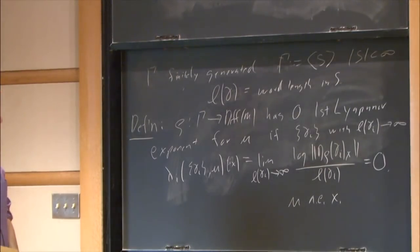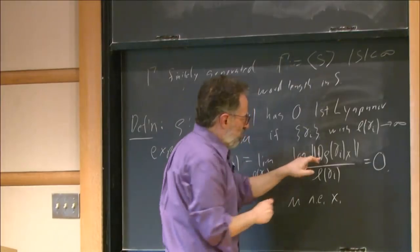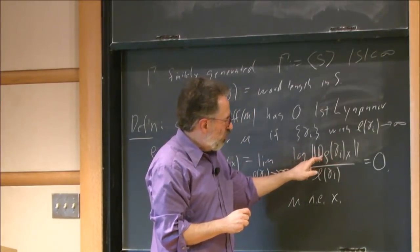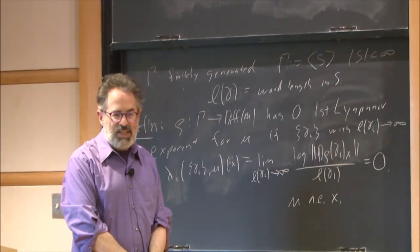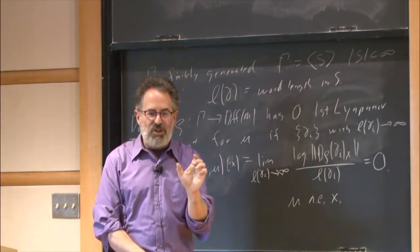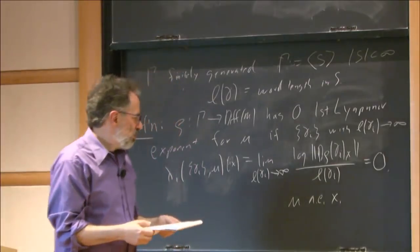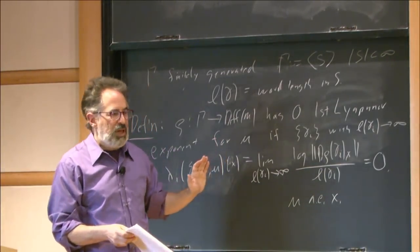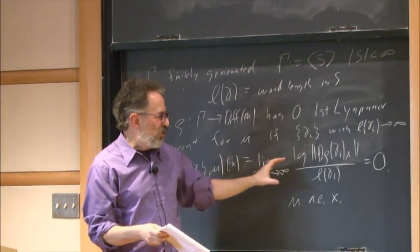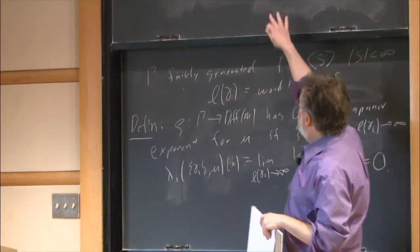Inside the double bars, it's the derivative of rho of gamma_i at the point x, and I'm measuring using a Riemannian metric—but this notion doesn't depend on which Riemannian metric I pick. The measure plays the role of making the statement hold almost everywhere. This is some sort of asymptotic statement, and the rate of convergence to the limit can depend on the point.